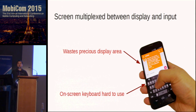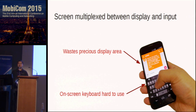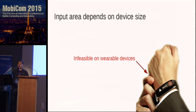This also leads to devices with larger and larger screens and with higher energy consumption. Also, the on-screen input can be very hard to use because the user's finger will cover the display and block the visual feedback. Also, the input area depends on device size, which means this kind of interaction is infeasible on emerging wearable or IoT devices, since they can have very tiny sizes.